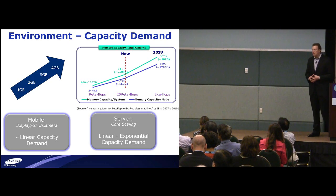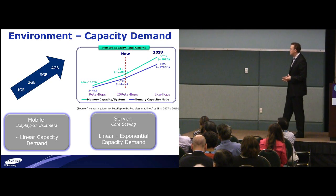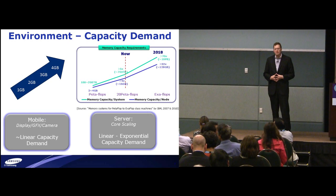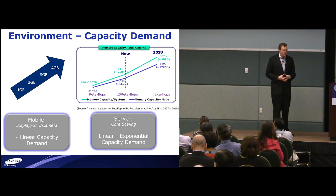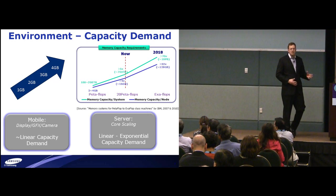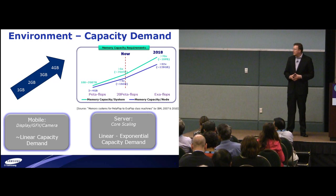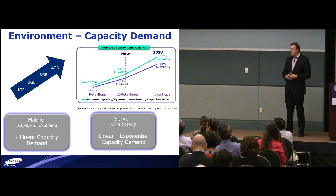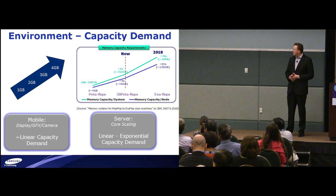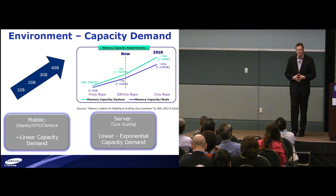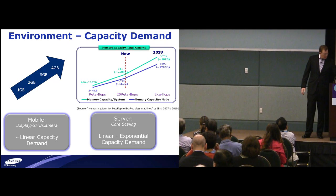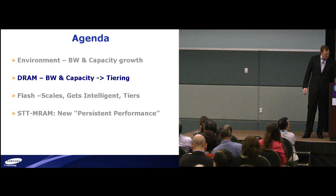The capacity trend in handhelds is more linear than it is exponential. However, in many of the server applications that we look at, the capacity demand in servers is exponential. And so we're trying to figure out how do we satisfy the bandwidth and capacity demands that we see in the industry. As such, we look at DRAM technology and what's happening.